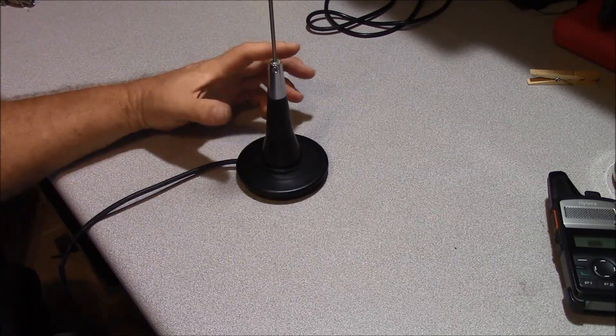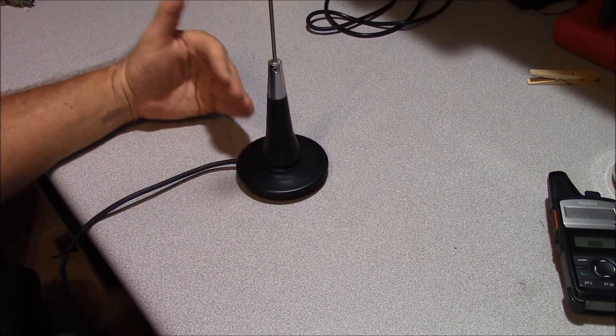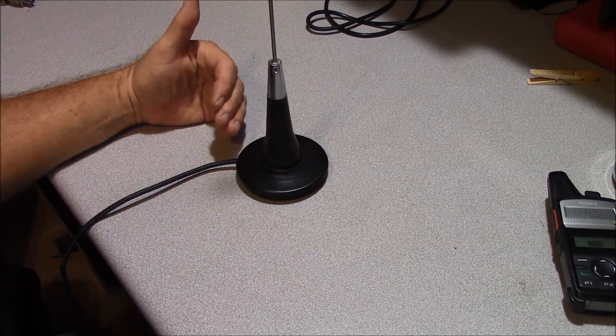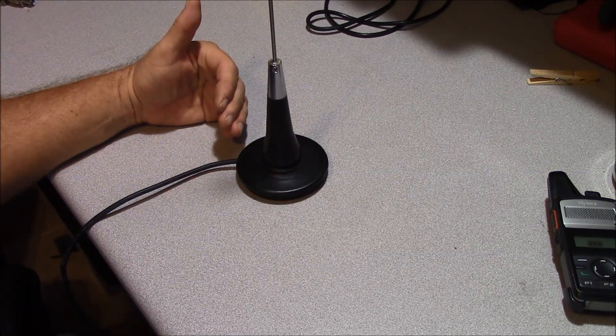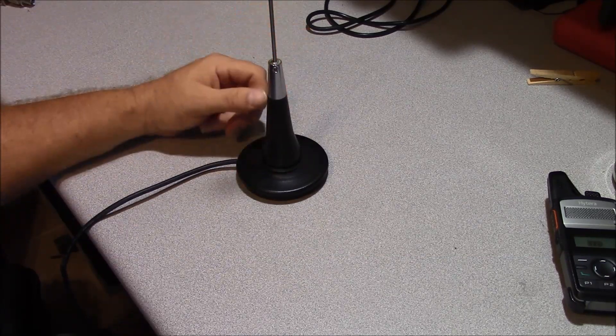Magnetic antenna bases are very popular in two-way radio for good reason. They give you a lot of flexibility. It's very easy to move radios from vehicle to vehicle. Some individuals don't like putting holes in their vehicle when they mount an antenna, so they choose to go with a magnet base.